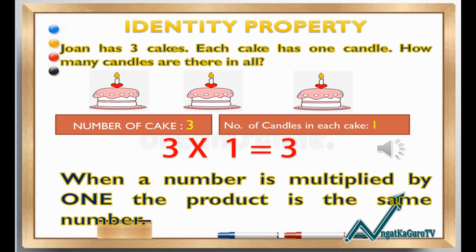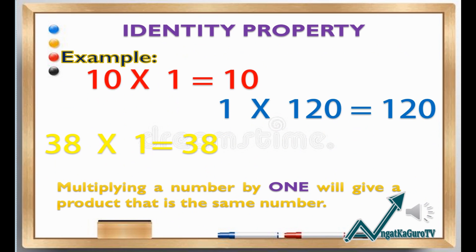When a number is multiplied by one, the product is the same number. Another example of the identity property of multiplication: 10 times 1 equals 10. 1 times 120 equals 120. And 38 times 1 equals 38. Multiplying a number by one will give a product that is the same number. That is the identity property of multiplication.